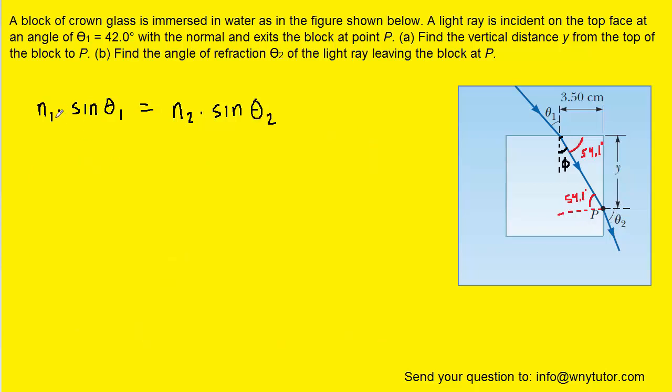So here's Snell's law again. Just be careful about the indices of refraction, the N1 and the N2. Notice that now we're calling N1 the crown glass or the index of refraction of crown glass because our incident ray at this point P is immersed in the crown glass.